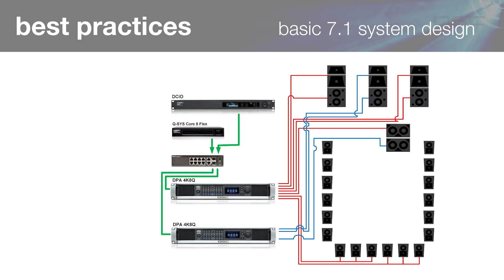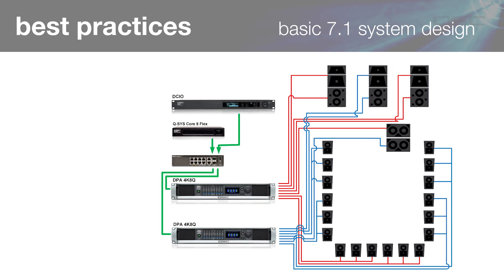The remaining channels on the second amp feed the left and right wall surround arrays, and you're done! A simple and elegant high-performance 7.1 cinema sound system using just two amplifiers with complete signal processing, control, and monitoring — only possible with the Q-SYS ecosystem.